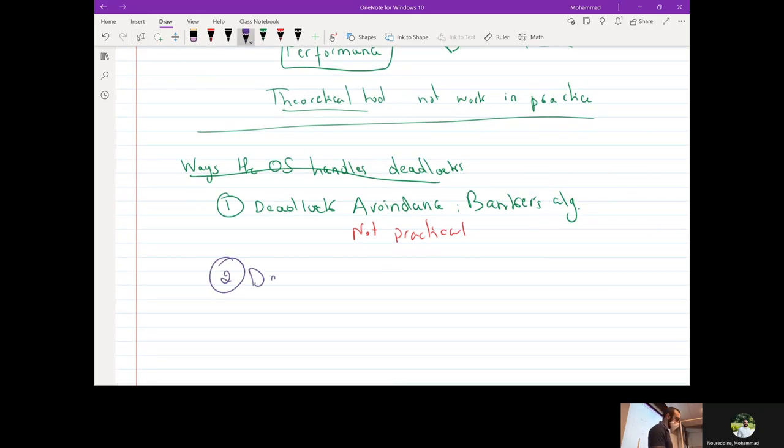So the other technique is basically called deadlock detection and recovery. So basically, when we get to a state where a lot of threads aren't sleeping, we run the bankers algorithm to detect if there is a deadlock or not. If there is a deadlock, then we must initiate a recovery approach. One of those recovery approaches would be just kill all the processes involved in the deadlock. One other approach would be, try killing one of them or two of them and see if that helps. If it helps, then we're good. If it doesn't, then we have to kill more threads and more processes.